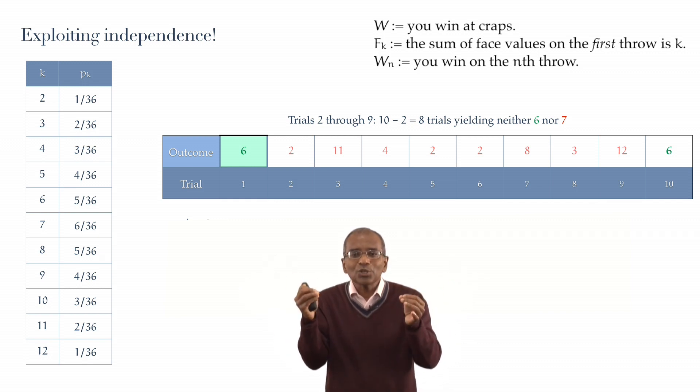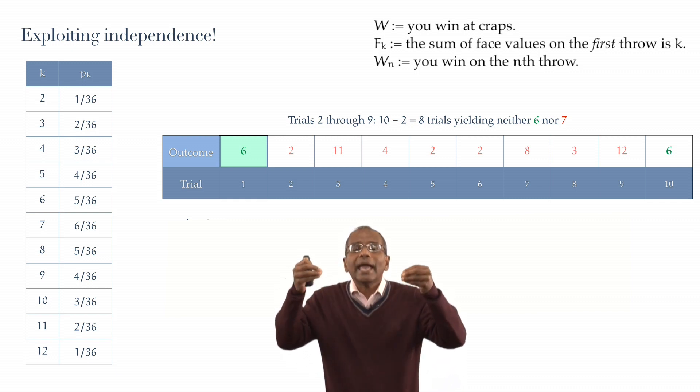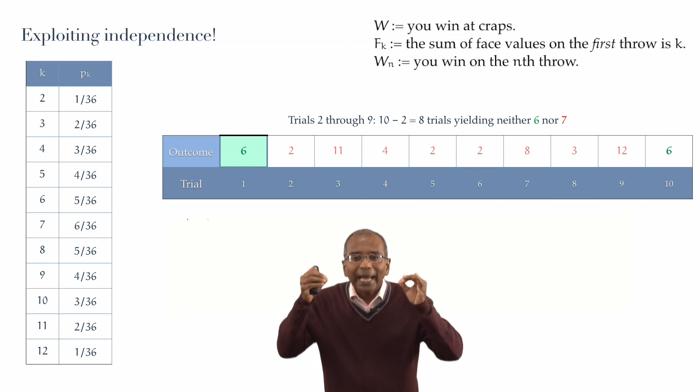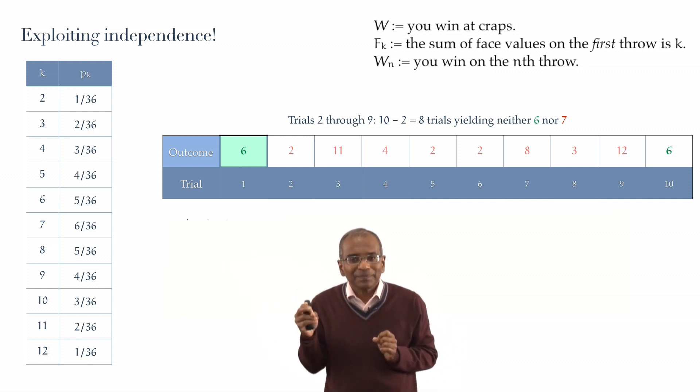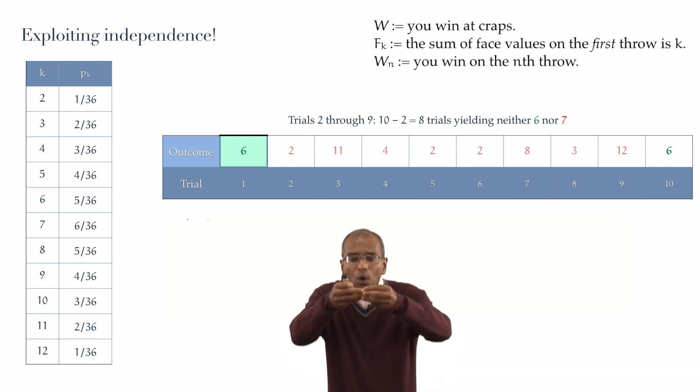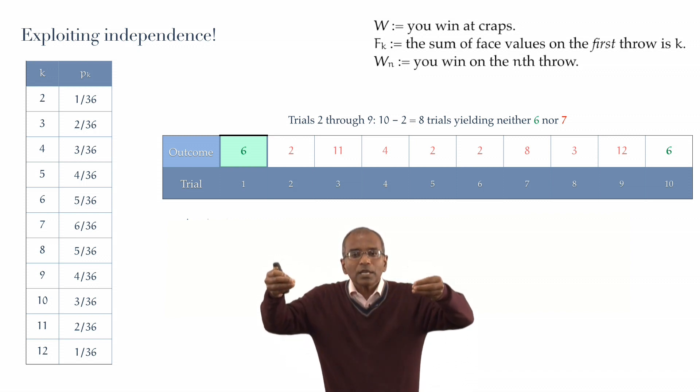In these 10 minus 2 or 8 trials, we get a succession of numbers. And all we know is that these numbers can be anything whatsoever, excepting 6, because if any of them were 6, we'd have won earlier. Or 7. If any of them were 7, you would lose the game immediately. And so, all the intervening numbers, 10 minus 2 of them, have to be any number except 6 or 7.